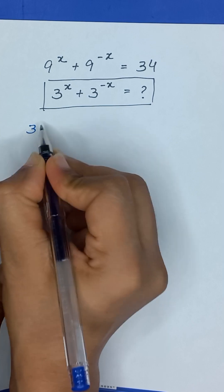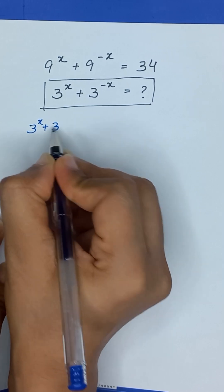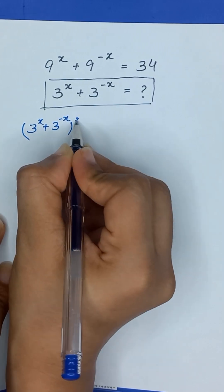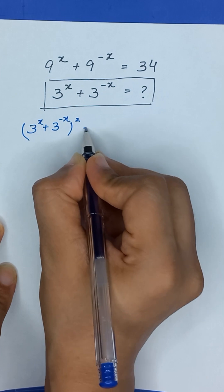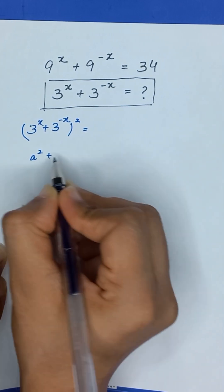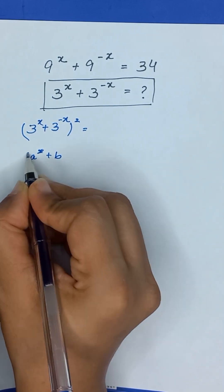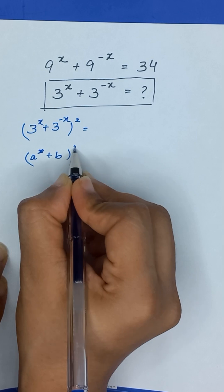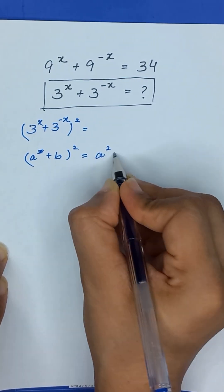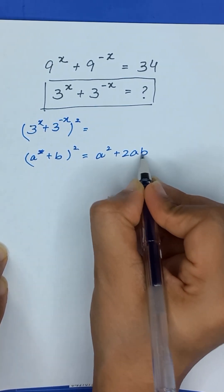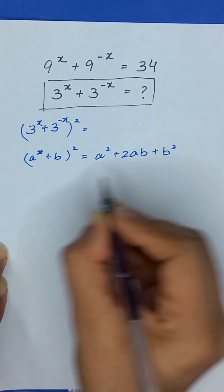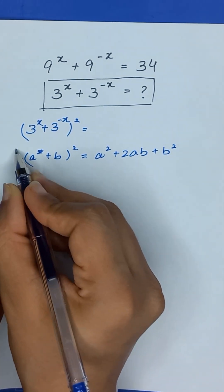3 to the power x plus 3 to the power minus x — if we apply a square on it, it is in the form of a plus b whole square, which is equal to a square plus 2ab plus b square, which is an identity.